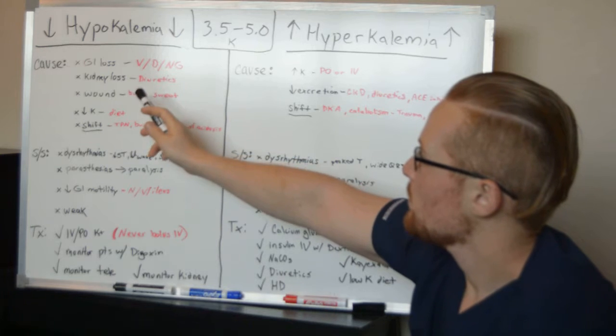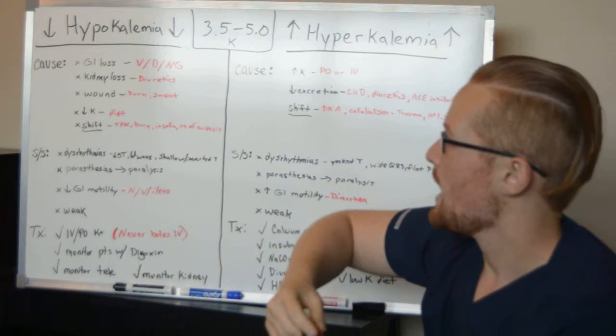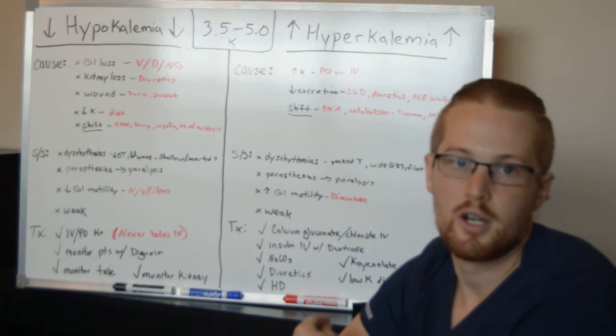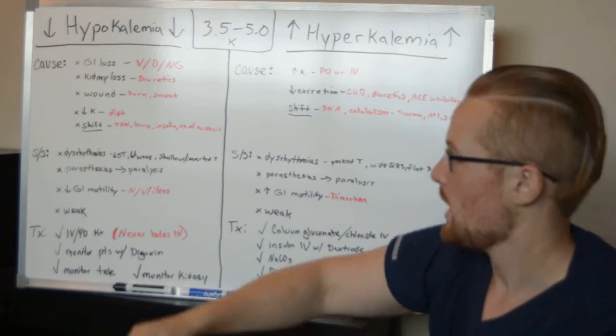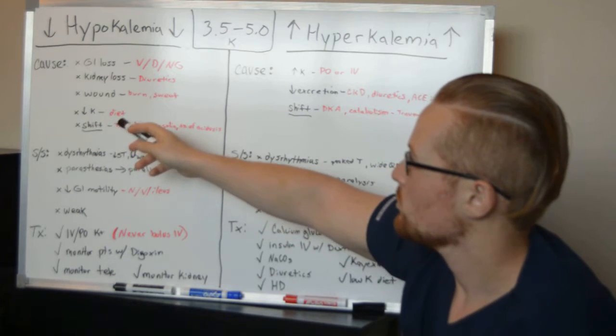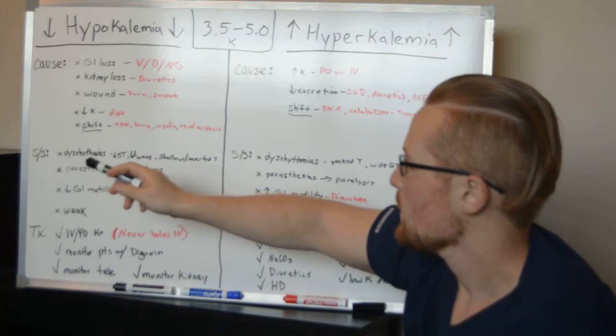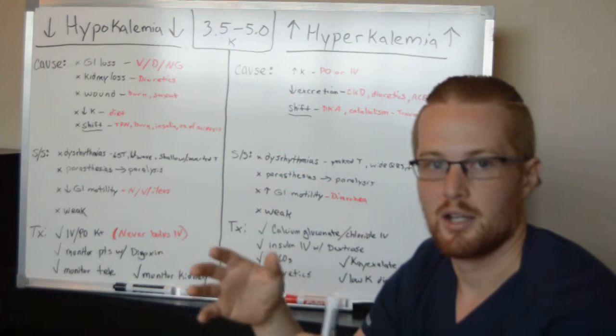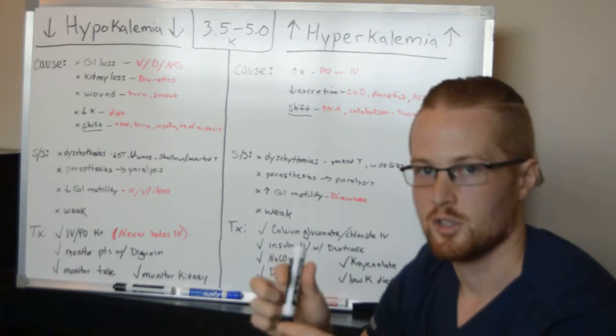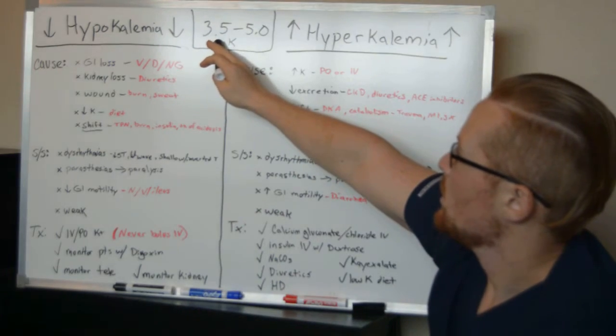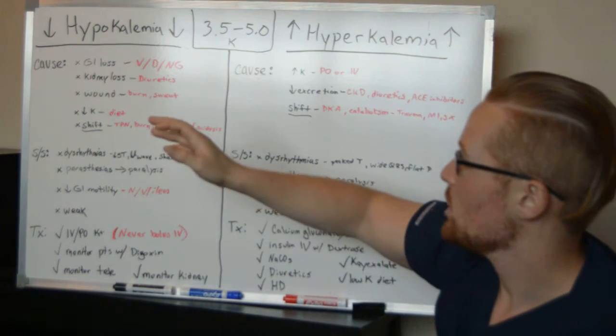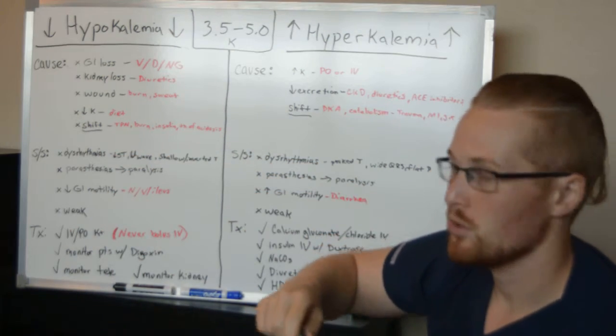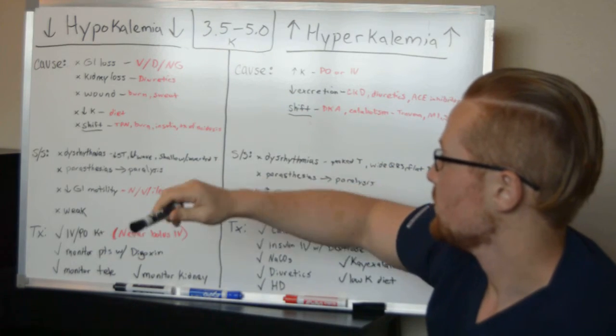You can also see hypokalemia from a loss of potassium from your skin from sweating out your electrolytes or if you have a burn that is weeping fluids. A low potassium diet can also cause low potassium levels and shifts of potassium in the body. So there's potassium in the cells and potassium in the blood and what we're measuring here is potassium in the blood. So if you have a shift from that potassium from the blood into the cells, then you can see low blood potassium levels.